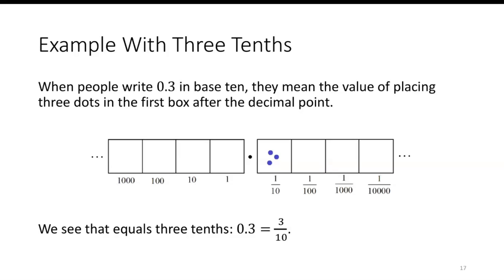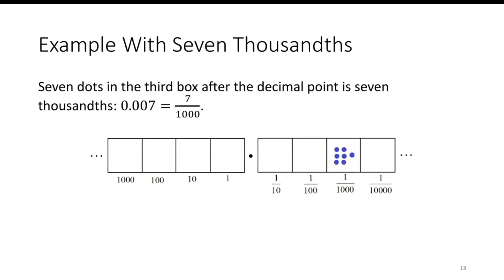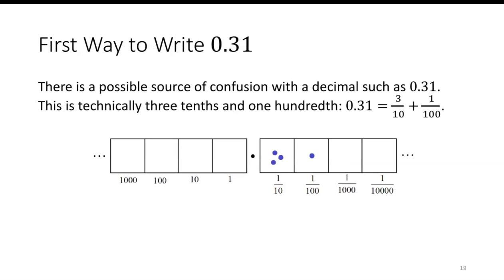Now, when people think of, say, three-tenths in base ten, they mean the value of placing three dots in the first box after the decimal point. So three-tenths would be three dots in the tenths place. Likewise, seven dots in the third box after the decimal point represents seven in the thousandths, so seven-thousandths.